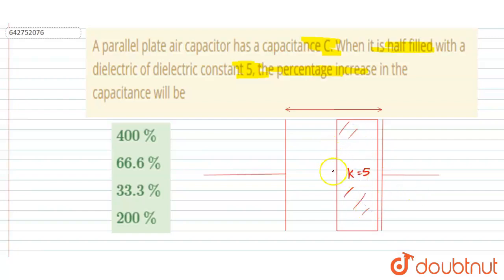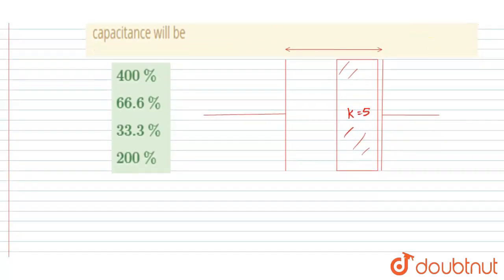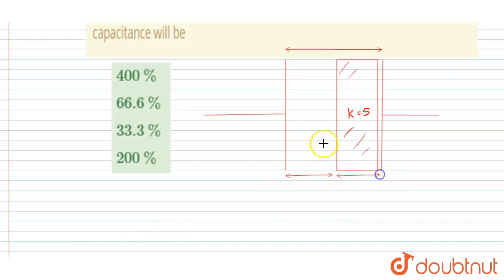Now we have to find the percentage increase in capacitance. For d/2 distance the dielectric is air, and for the other d/2 distance the dielectric of constant k is filled. These act as two capacitors connected in series.